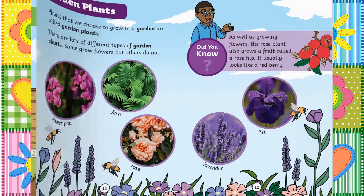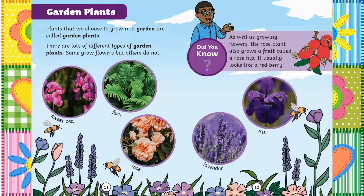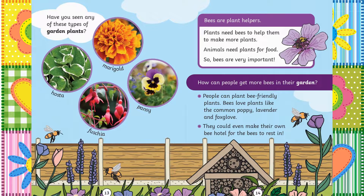Chapter 4: Garden plants. Plants that we choose to grow in a garden are called garden plants. There are lots of different types of garden plants. Some grow flowers but others do not. You have the sweet pea, fern, rose, lavender and the iris. Did you know, as well as growing flowers, the rose plant also grows a fruit called a rosehip. It usually looks like a red berry.